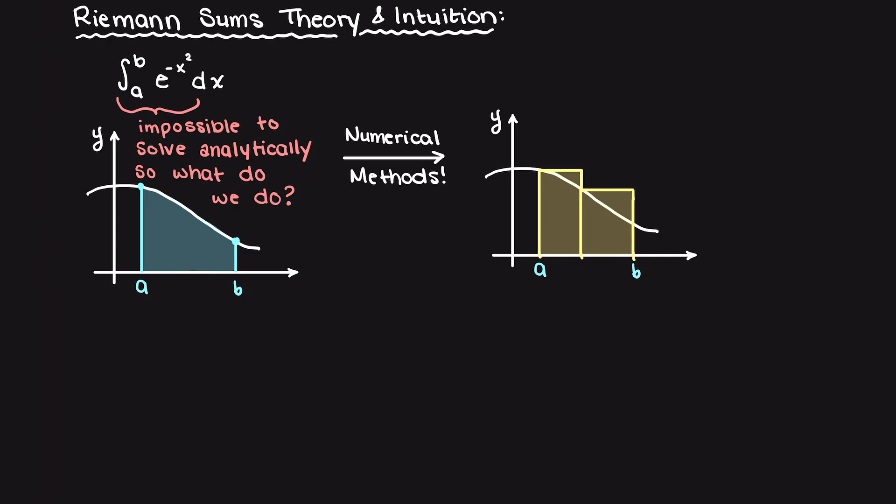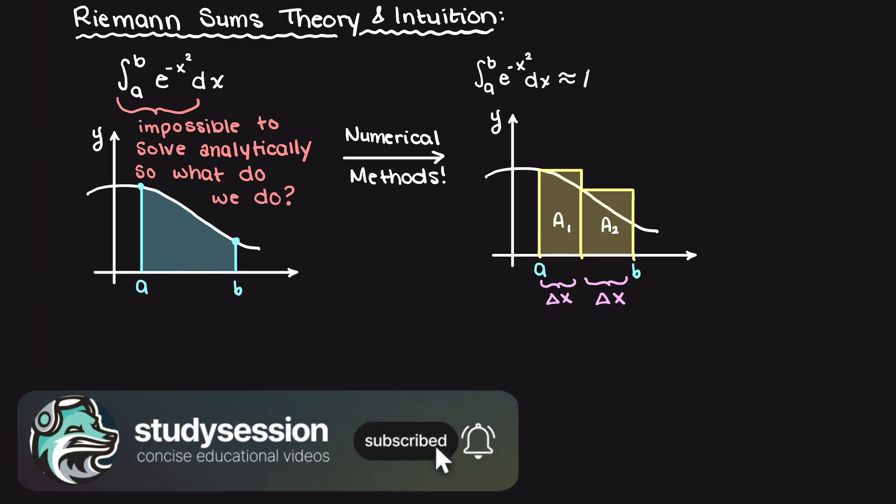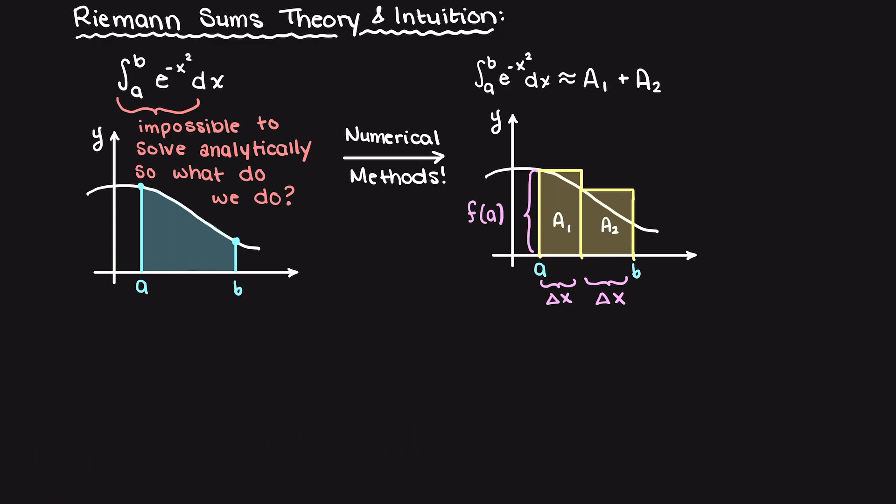For now, let's just assume that all of our segments are the same width. We would then sum up the areas of all these rectangles to get an approximate total area under the curve which we can see here.